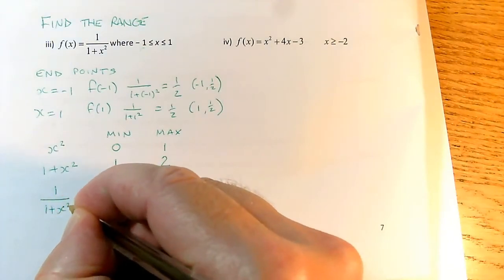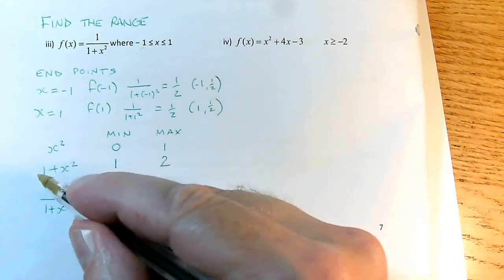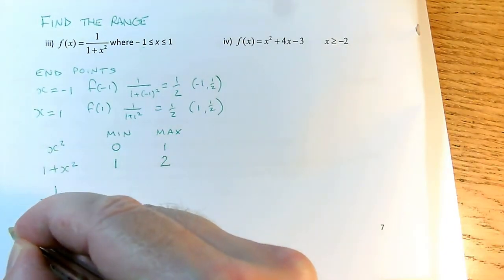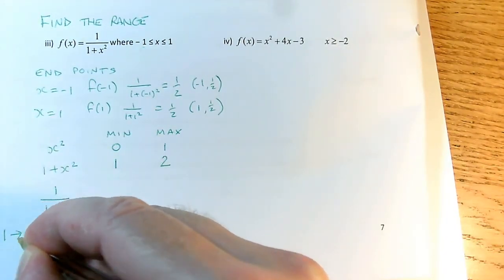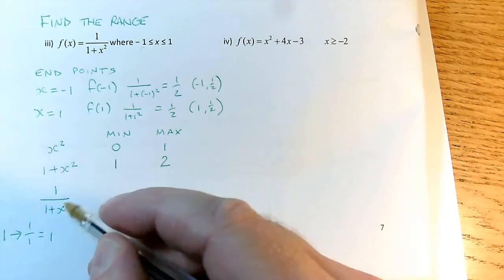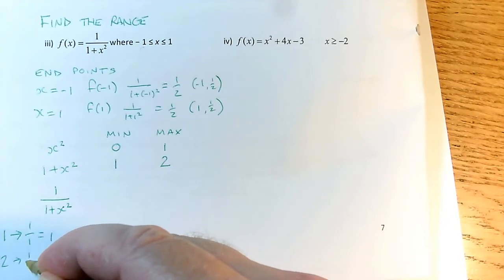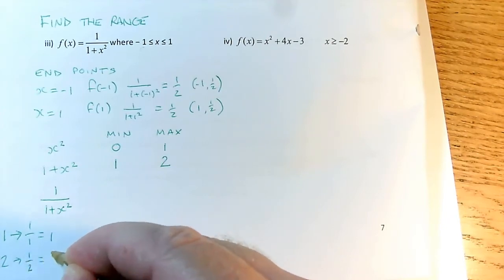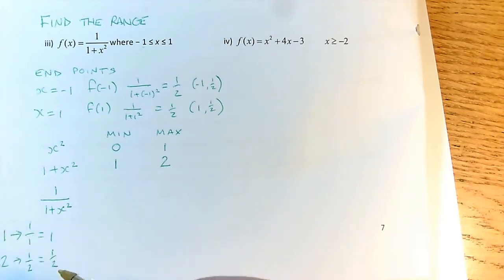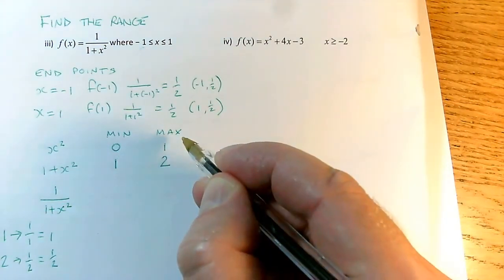But now let's think about 1 over 1 plus x squared. I've got to be a little bit careful here. But if I do 1 over this 1, so I want the possible answer for 1 plus x squared is 1, so 1 will take me to 1 over 1, which is 1, because I'm doing 1 over the previous answer. So if I do 1 over the previous answer, but I now start with the 2, so my 2 is going to go to 1 over 2, which is 1 half. So because I'm now doing 1 over, the actual order has changed.